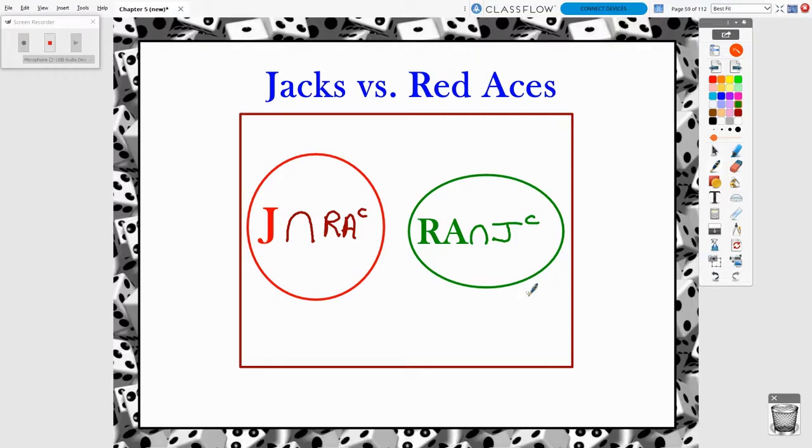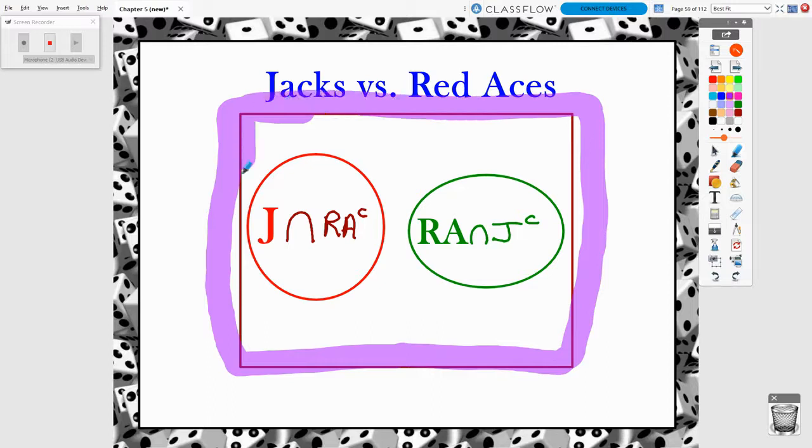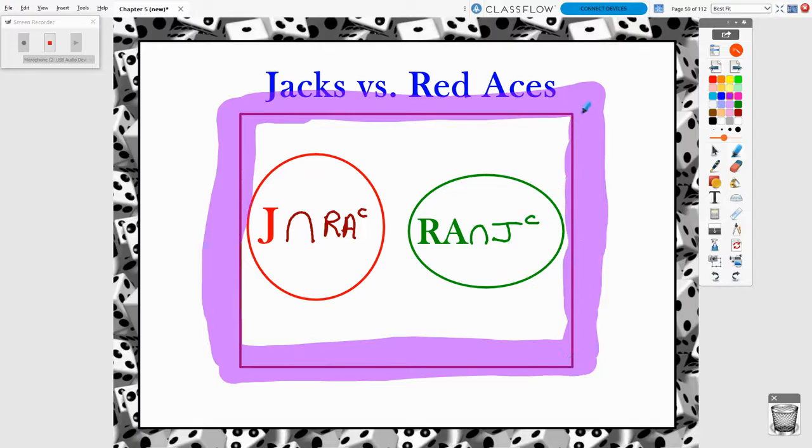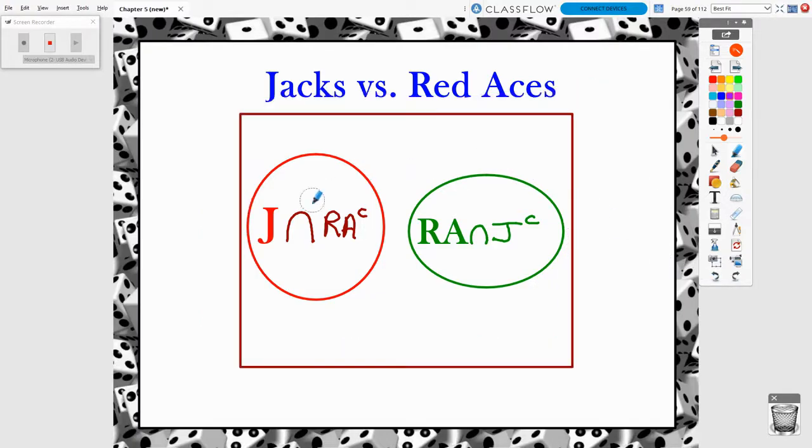Now, there's one other area that we need to really write something about here. And you might go, no, that's all. There's only two bubbles. But really, we've got this sample space. Sample space, we talked about that not that long ago. And so if I have a jack and not a red ace, we said there were four of those cards, four 52nds of getting that. And red aces that were not jacks, there were two red aces that weren't jacks. But remember, that's only six 52nds.